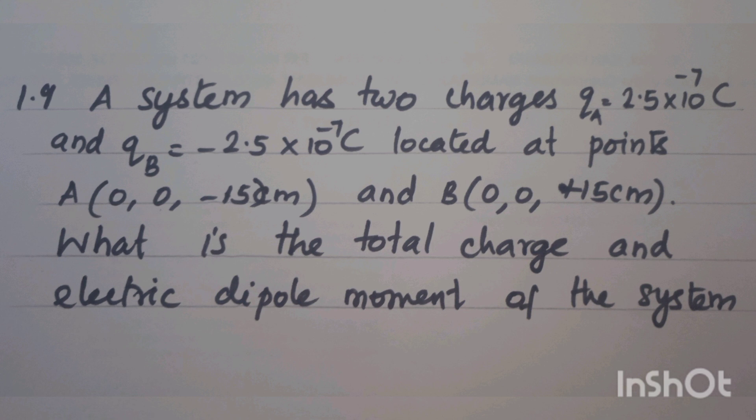So here are equal and opposite charges on the Z axis. This is a dipole. For total charge, the charges cancel, so total charge is equal to 0.